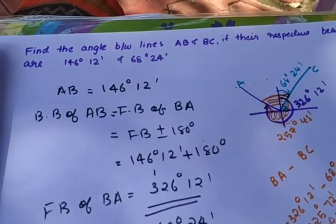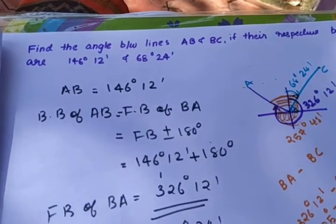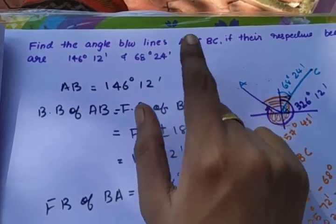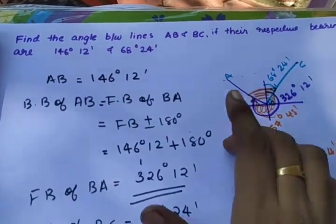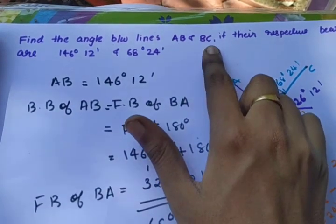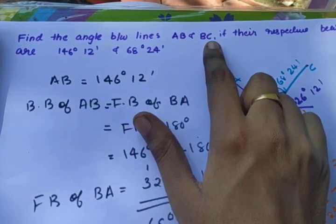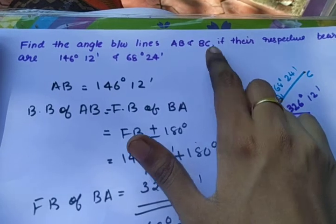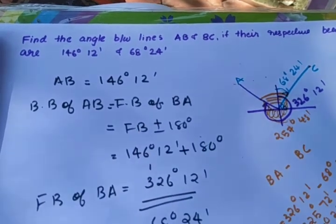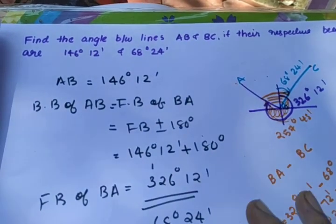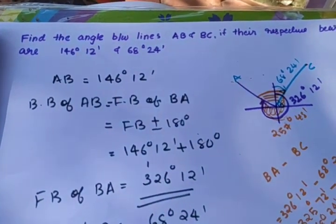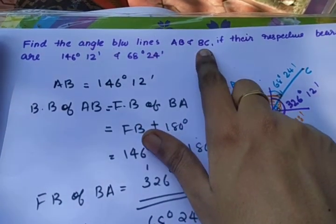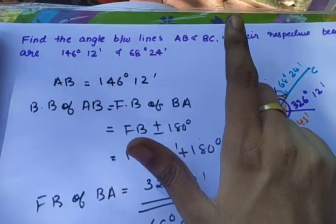The question is: we have to find the angle between the two lines AB and BC. If we have to find the angle of BA and BC, we change the angle as BC and BA. We have to change using BA and BC.